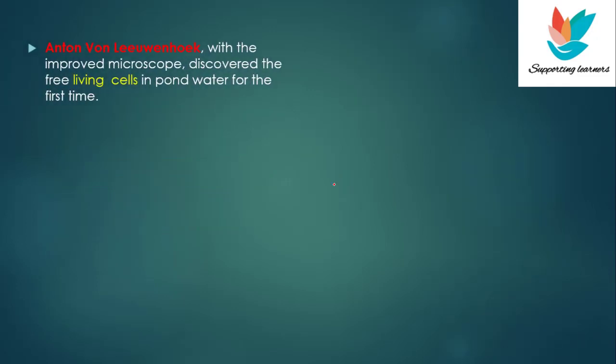Next came Anton van Leeuwenhoek, who with improved microscopes discovered free-living cells in pond water for the first time. Anton van Leeuwenhoek was a Dutch scientist, but he was not originally a scientist — he was actually working in a textile shop and was a craftsman. He used magnifying glasses to inspect the quality of fabrics.